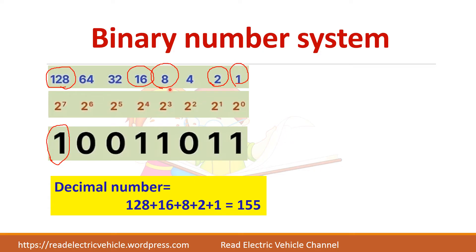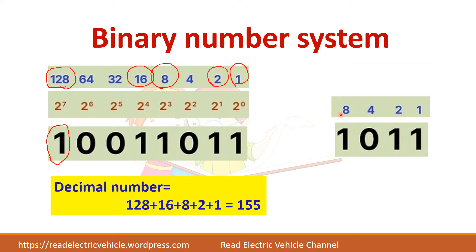In most problems or numericals in exams, only 4 bits will be given. So it is very easy to remember this conversion: write 8, 4, 2, 1 above the given binary number, then add all the 1s. For example, here it is 8 plus 2 equals 10, then 10 plus 1 equals 11. So this is equivalent to 11 in decimal. Always remember the 8, 4, 2, 1 sequence — it will be very easy to convert to decimal.